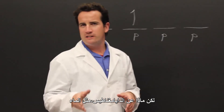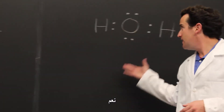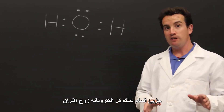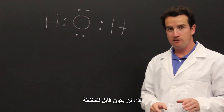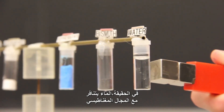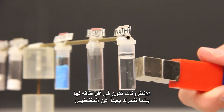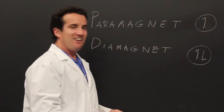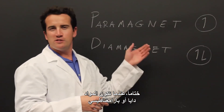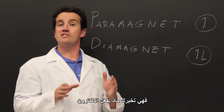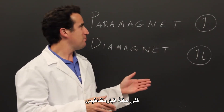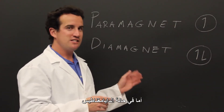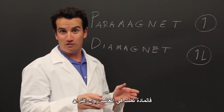But what about a diamagnet like water? The water molecule has all of its electrons paired — it will not be magnetized. In fact, water is repelled by a magnetic field; the electrons come to lower energy as they are moved away from the magnet. In conclusion, when something is a paramagnet or a diamagnet, it tells you what its electrons are doing. In the case of a paramagnet, it has at least one unpaired electron. In the case of a diamagnet, it has mostly paired electrons.